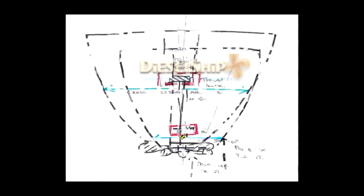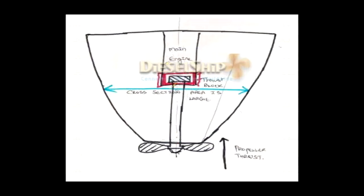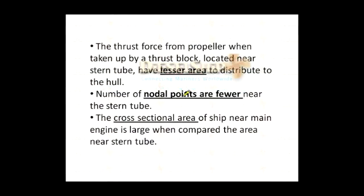When the thrust block is placed near the main engine, the cross-sectional area is comparatively larger for the propeller thrust to act on, and no additional stiffening members are required as the thrust block forms an integral part of the bed plate itself. So the thrust force from the propeller, when taken up by a thrust block located near the stern tube, has lesser area to distribute to the hull and fewer nodal points available near the stern tube.